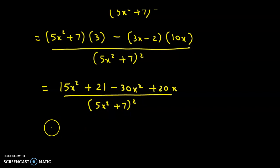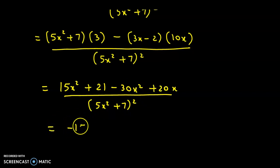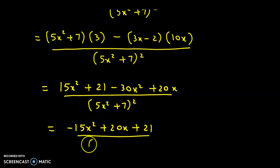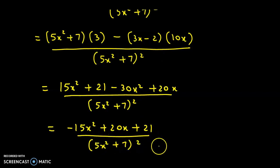With the negative sign, minus 20x becomes plus 20x. So finally we get 15x squared minus 30x squared, which is minus 15x squared, then plus 20x plus 21, divided by (5x squared plus 7) the whole square. So this is the value for dy by dx.